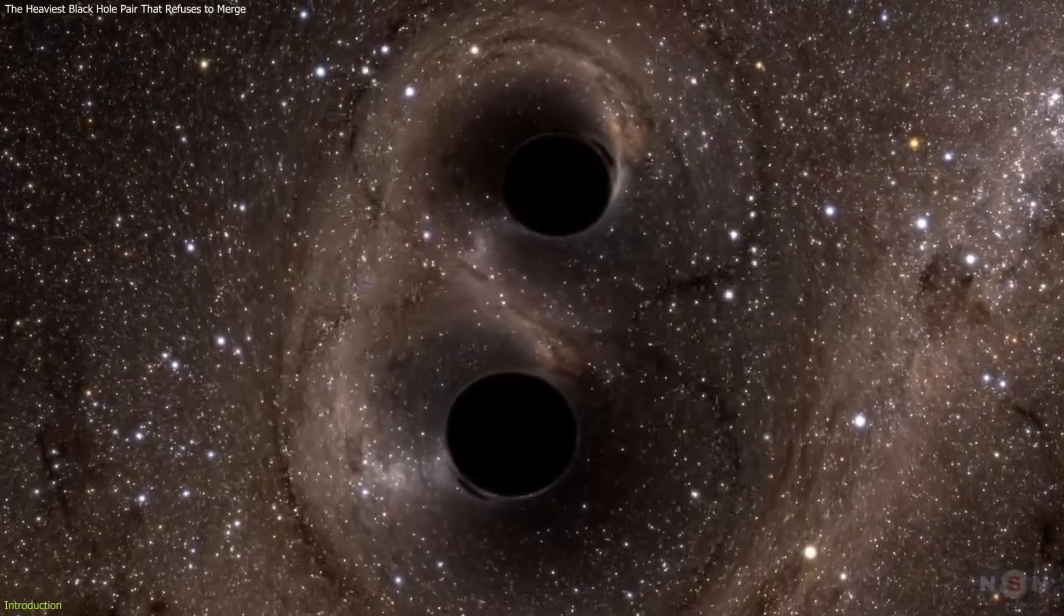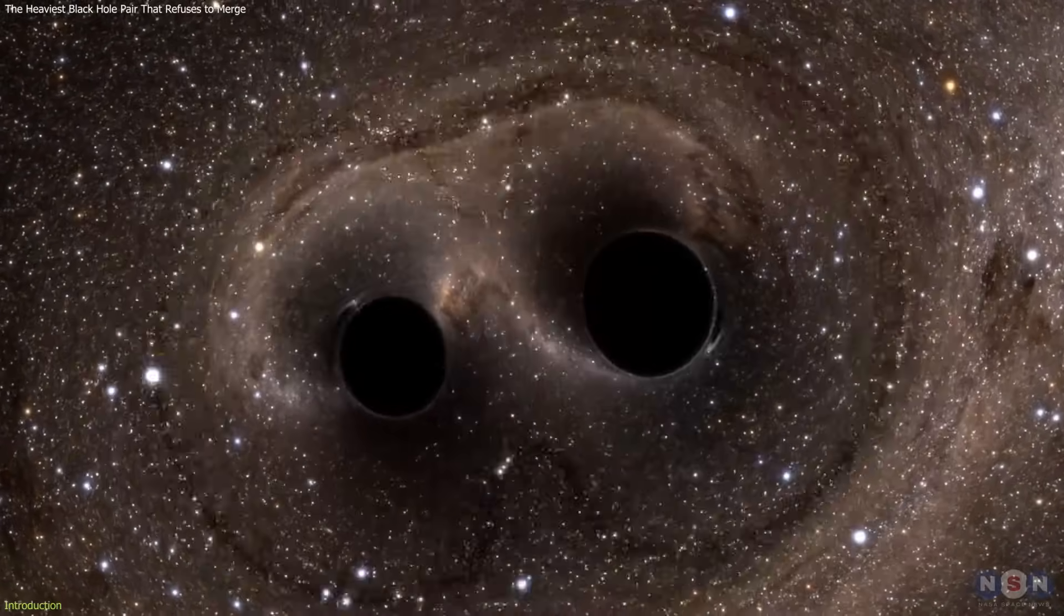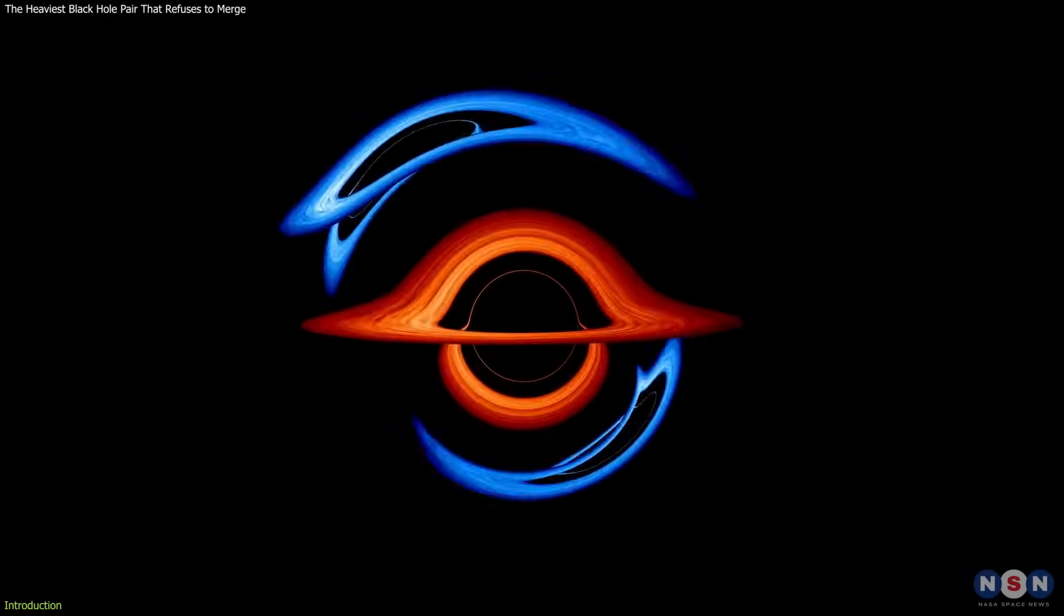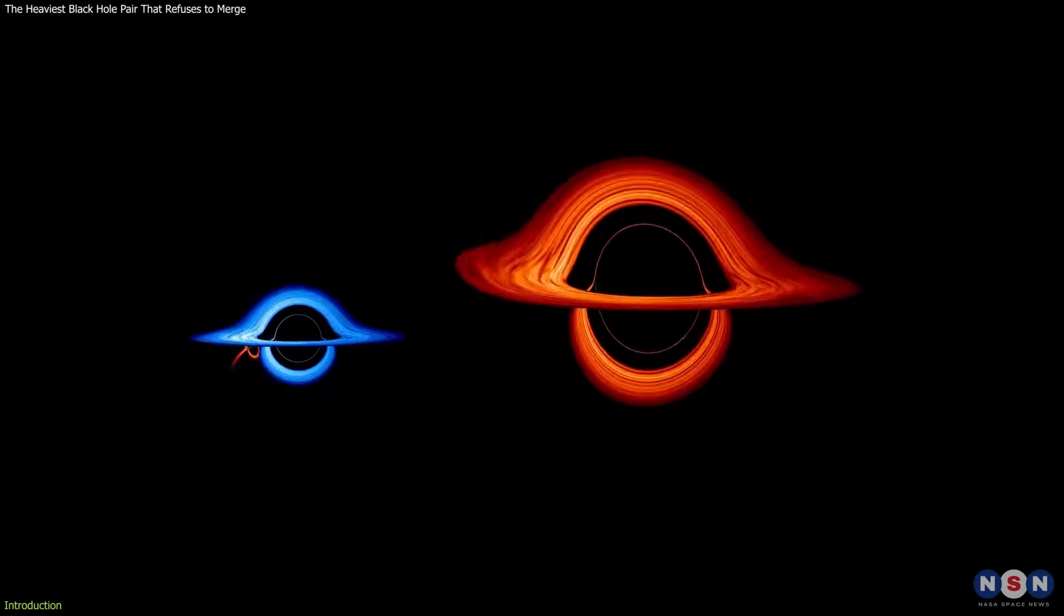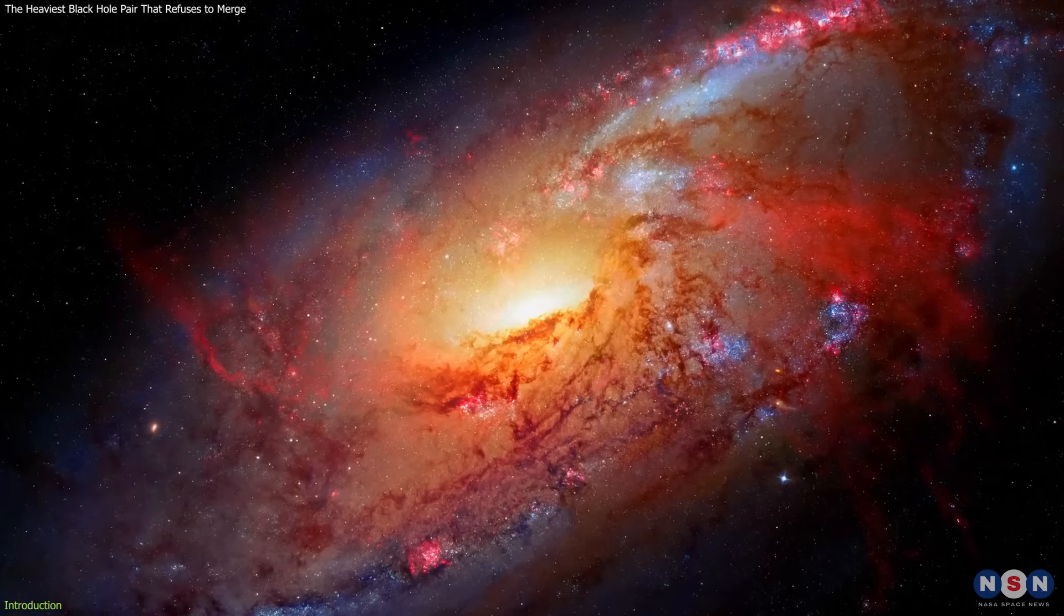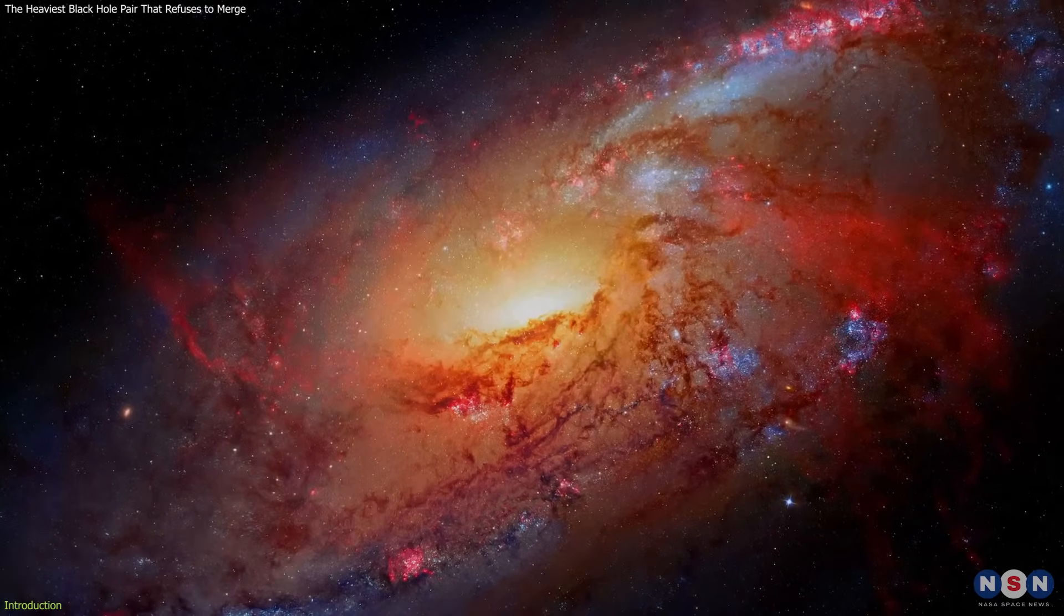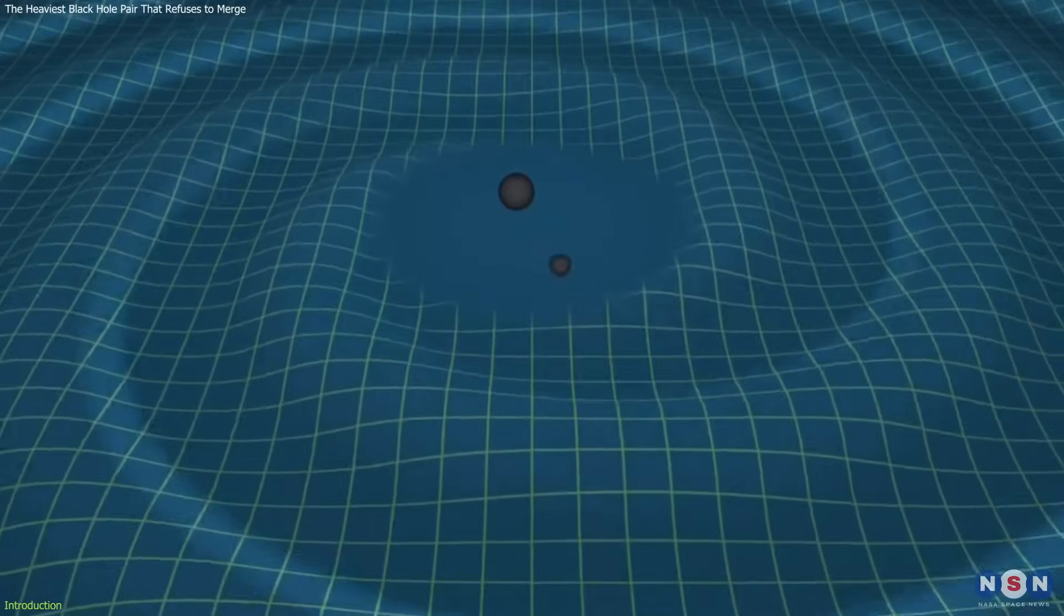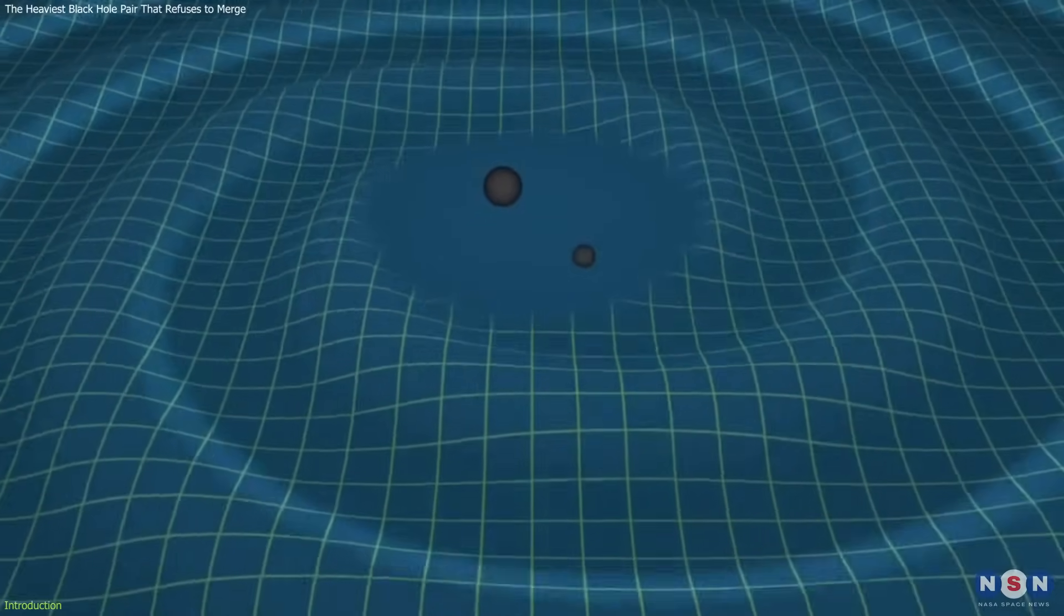Astronomers have discovered a rare and fascinating black hole binary - a pair of black holes orbiting each other that are so massive they refuse to collide and merge. This pair is located in a collision-created fossil galaxy and consists of the heaviest black hole pair ever seen, with a combined mass of 15 billion times the sun.